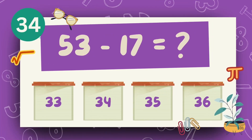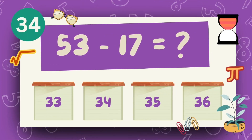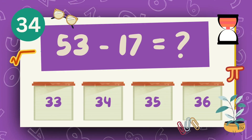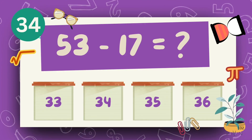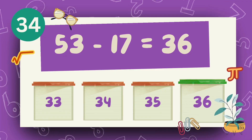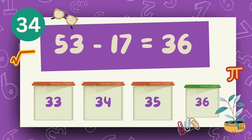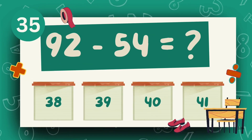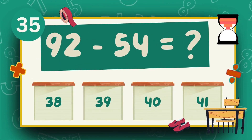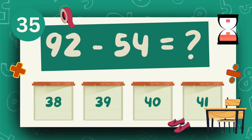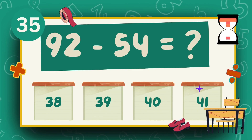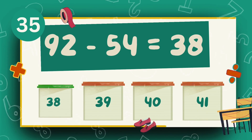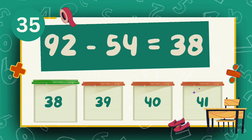What is fifty-three minus seventeen? The answer is thirty-six. What is ninety-two minus fifty-four? The answer is thirty-eight.